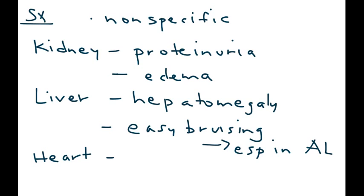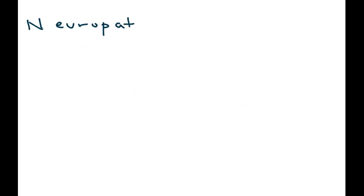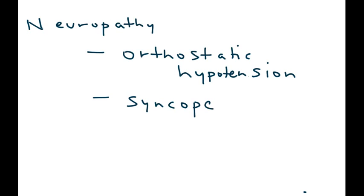If the heart is affected, then you have a clinical presentation of heart failure. Many neuropathic symptoms can present in people that have amyloidosis, and they're very important. One of them is orthostatic hypotension. The next is syncope. And another symptom presentation is carpal tunnel syndrome.